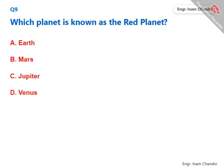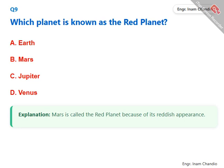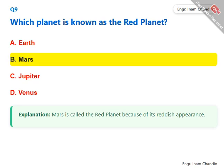Which planet is known as the Red Planet? Mars is called the Red Planet because of its reddish appearance. The correct answer is B. Mars.